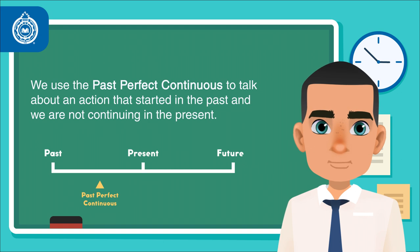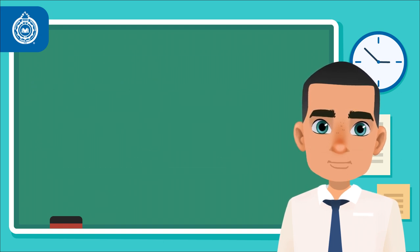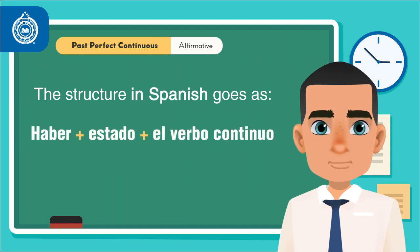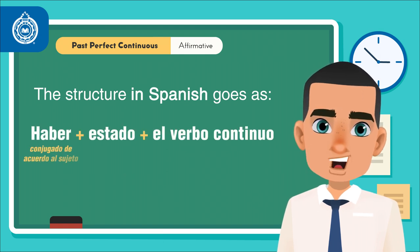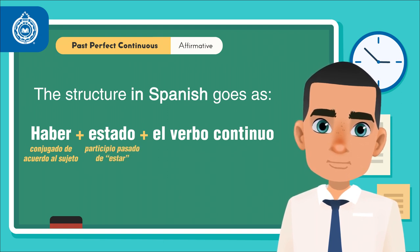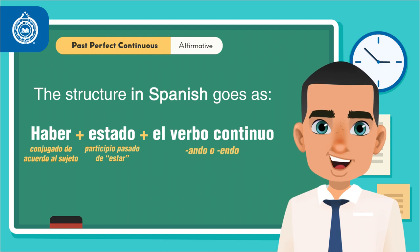Now, let us contrast it with Spanish. The structure goes as: Haber, conjugado de acuerdo con el sujeto, más estado, el participio pasado de estar, más el verbo continuo, ando o endo.